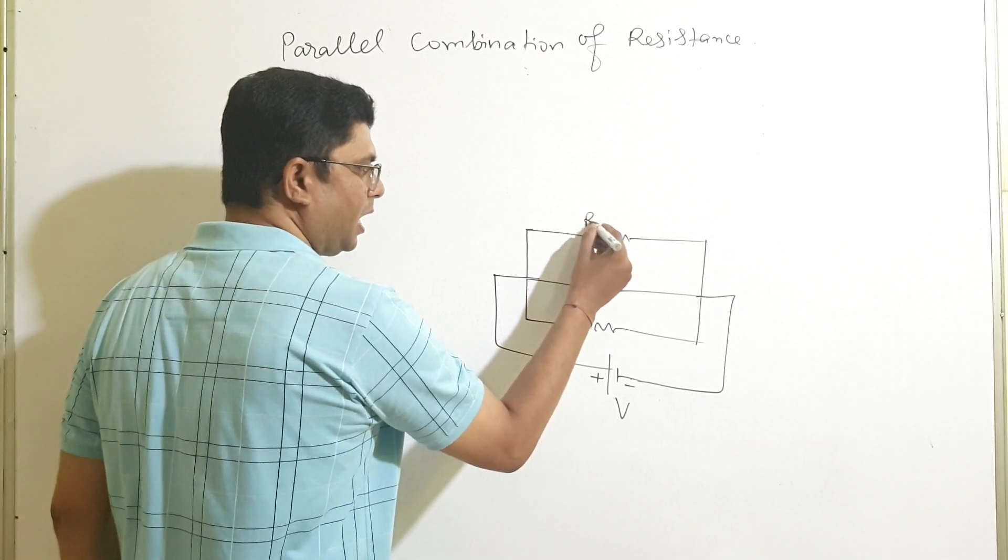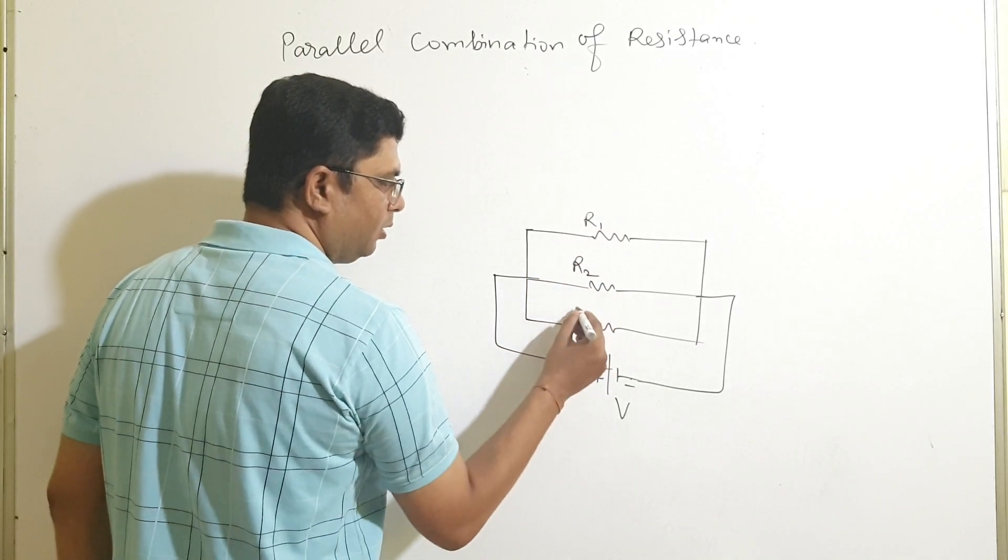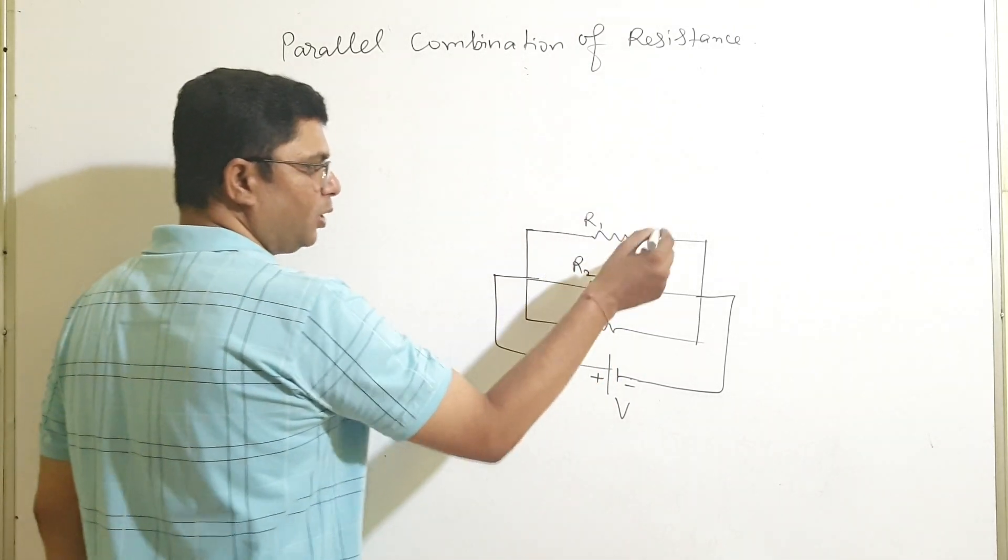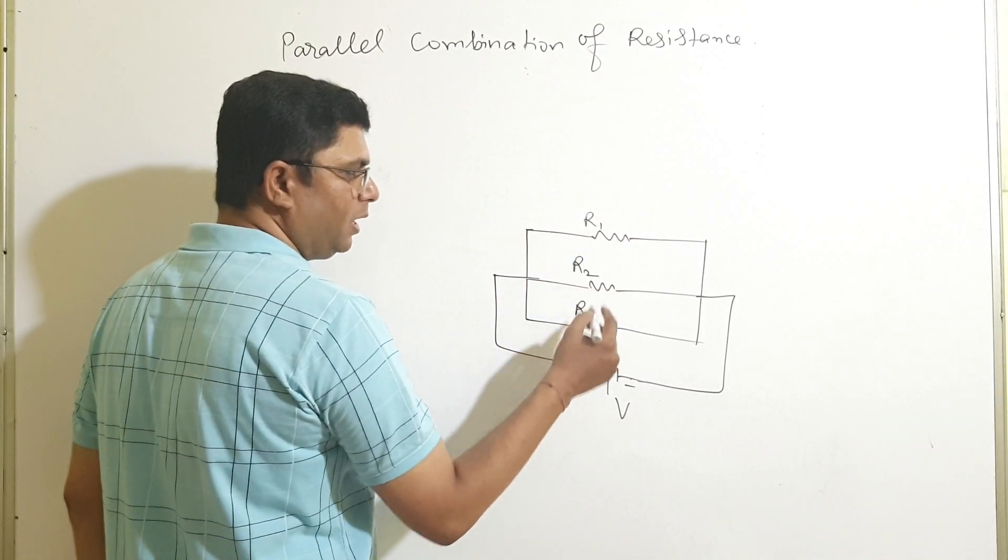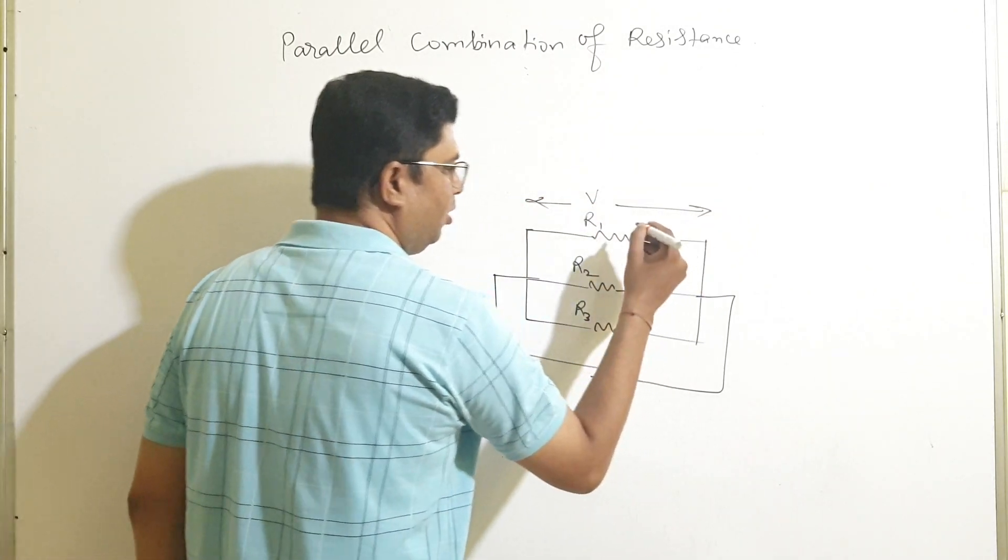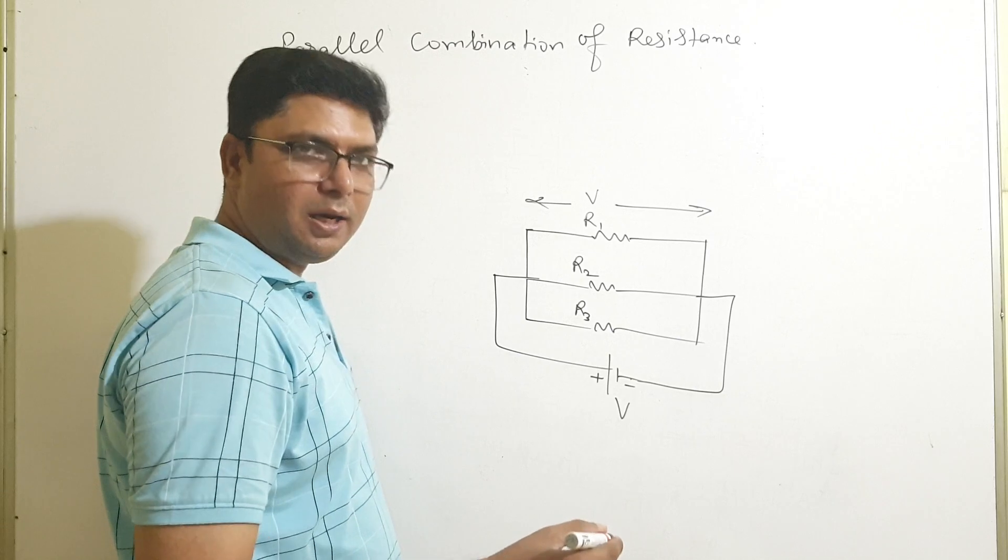Since these 3 resistances R1, R2, R3 are connected parallel, so potential along R1, R2, and R3 are same which is V. V is the potential along R1, R2, and R3.